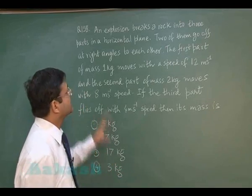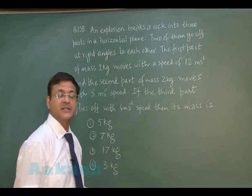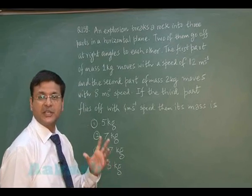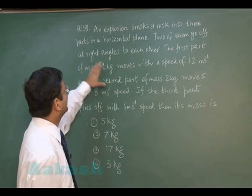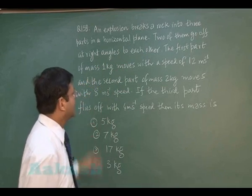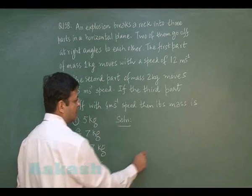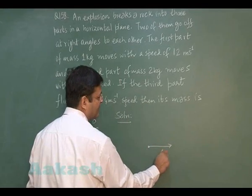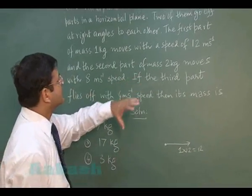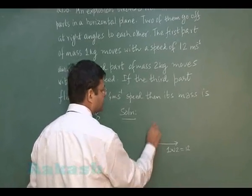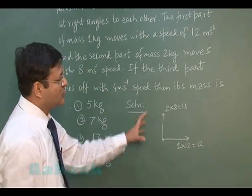Question 158 is based on conservation of linear momentum. An explosion breaks a rock into 3 parts in a horizontal plane. The rock was initially at rest, so initial momentum is 0 and final momentum must also be 0. Two parts go off at right angles: the first part of mass 1 kg moves at 12 m/s giving momentum 12 kg·m/s, and the second part of mass 2 kg moves at 8 m/s giving momentum 16 kg·m/s in the perpendicular direction.